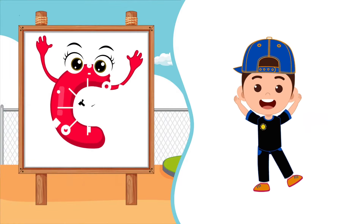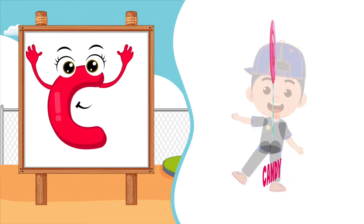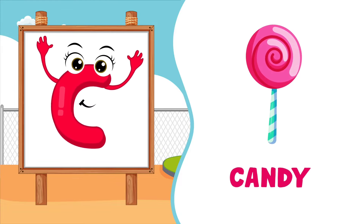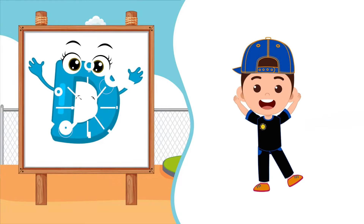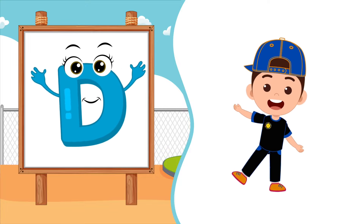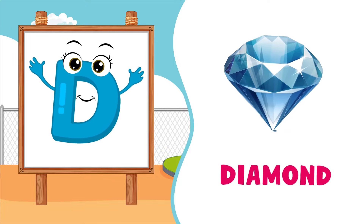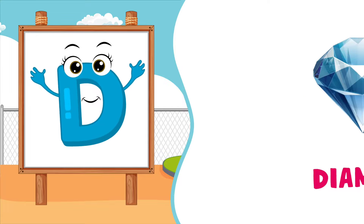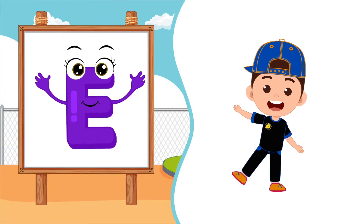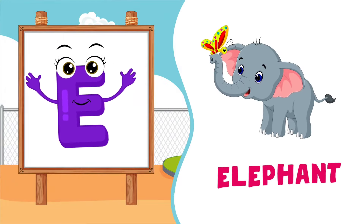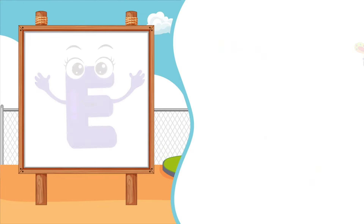C is for Candy, C-Candy, C-Candy. C, Candy. D is for Diamond, D-Diamond, D-Diamond. D, Diamond. E is for Elephant, E-Elephant, E-Elephant. E, Elephant.